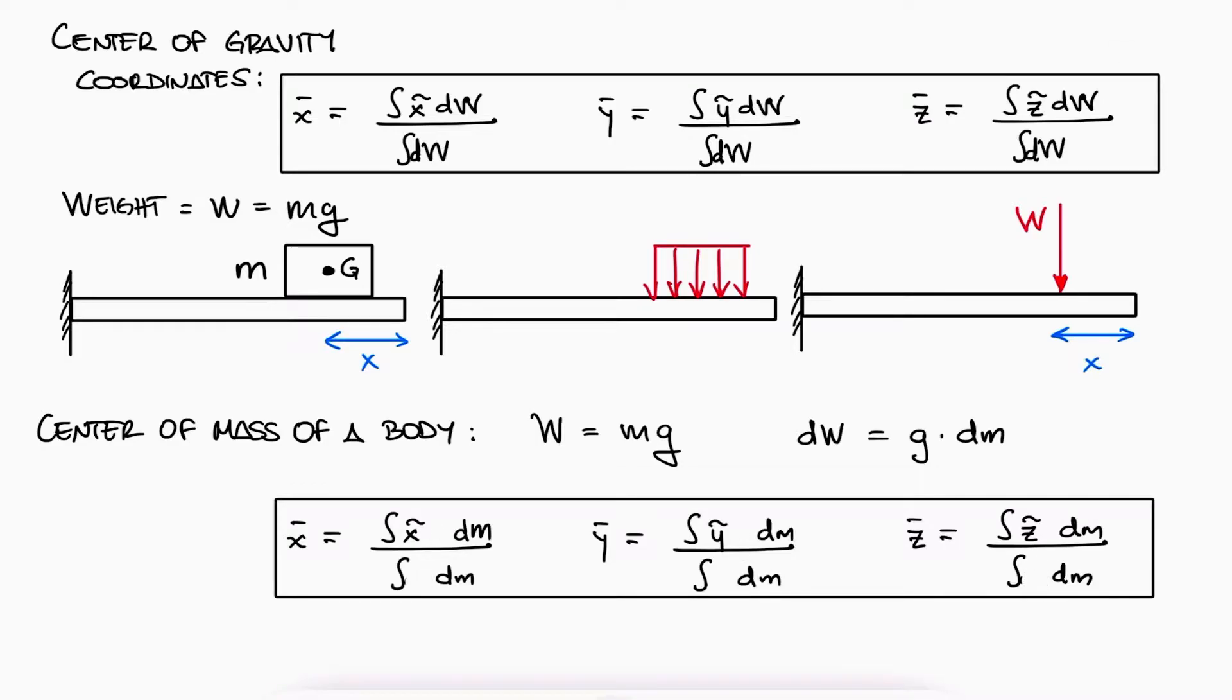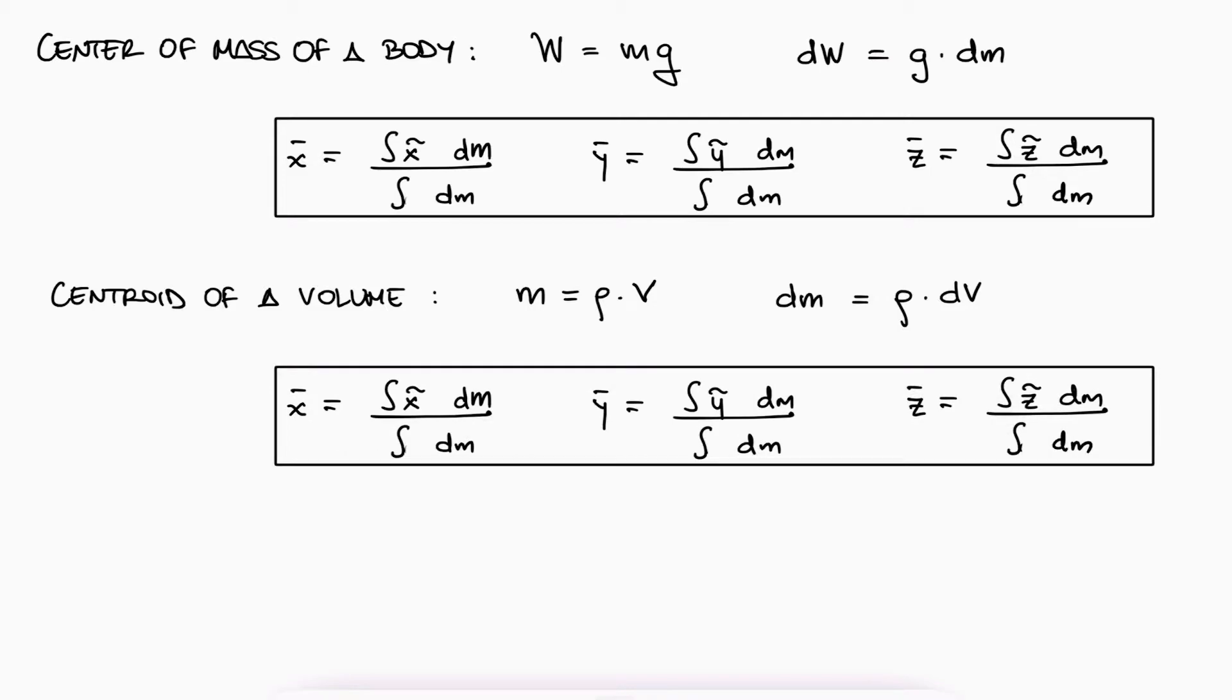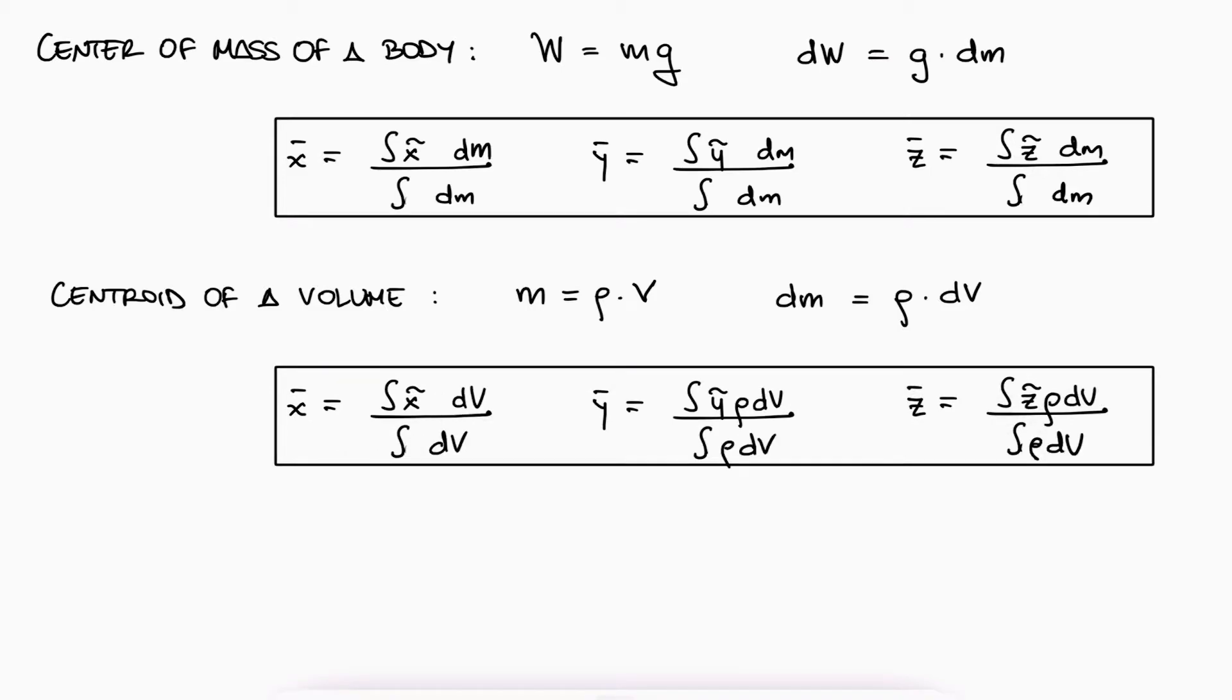Following the same process, and since the mass is equal to the density times the volume, the centroid of a volume can be calculated by writing dm as ρ dV. We'd use the same expressions, substitute dm, and cancel out the ρ's. The coordinates for a centroid of a volume would be given by the same expressions with dV instead of dm.